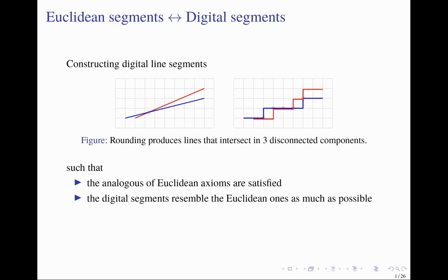The most common approach is to do rounding. Unfortunately, many interesting properties can get lost. On the left-hand side you can see two Euclidean segments that intersect in one point. On the right-hand side, we rounded those Euclidean segments and now they intersect in three disconnected components. We look for constructions of digital line segments such that the analogues of Euclidean axioms are satisfied and they visually look similar to their Euclidean counterparts.